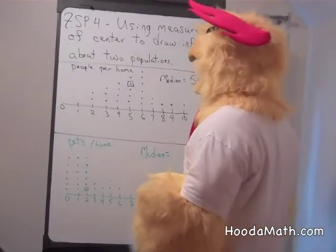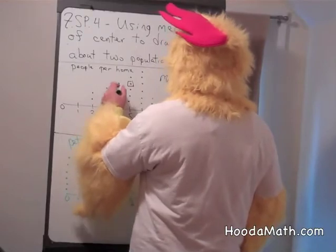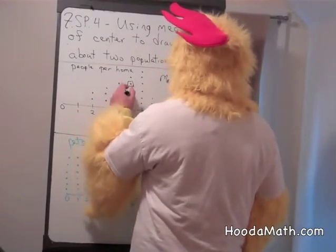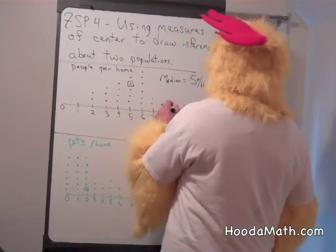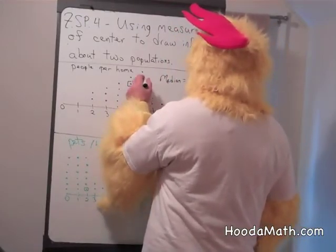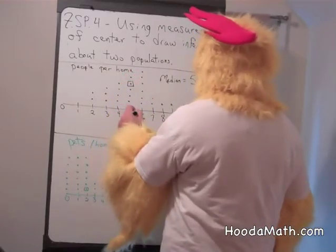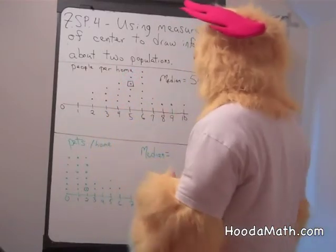If there's 25, we could count this way. 1, 2, 3, 4, 5, 6, 7, 8, 9, 10, 11, 12. This is the thirteenth. 1, 2, 3, 4, 5, 6, 7, 8, 9, 10, 11, 12, and that's the thirteenth, which is five people per home.